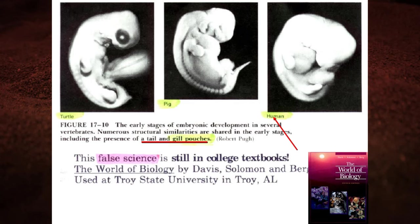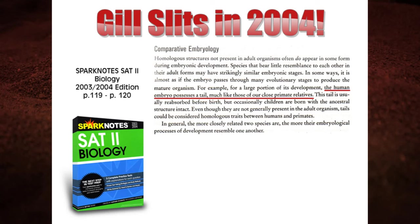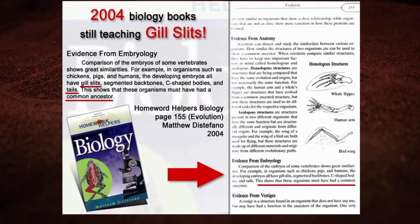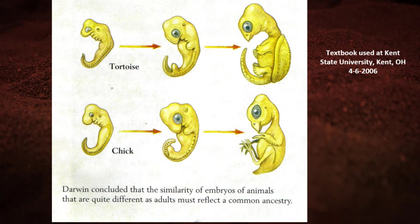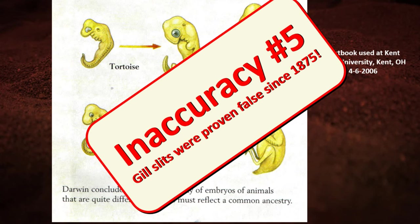It's also still in a college textbook under 'gill pouches.' And to top it off, when you take the SAT to enter college, you have to study gill slits to pass the test. If the question pops up, you must respond that this fraudulent icon of evolution — fraudulent since 1875 — is a fact to get the question correct. Number five: gill slits were proven false since 1875 and are still in all the textbooks.